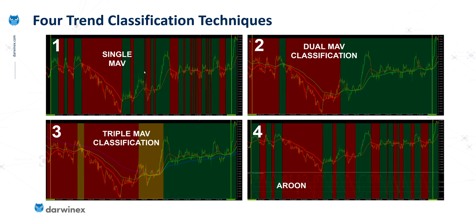Top left we see the single moving average version. One of the characteristics of this is that it really struggles when we are in a trading range, and the categorization seems to continually flip from one to the other. This could be improved by using a slower moving average, but moving averages are lagging indicators, and the higher the number of periods you use, the slower the indicator is to react to changing market dynamics. For example, where the categorization changes from green to red, the red categorization happens after the downtrend actually started because of this inherent lag.